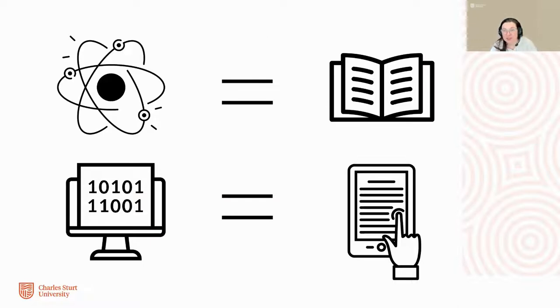Digital information does not exist in the same way that physical representations of information do. Physical representations are a collection of atoms while digital structures are made out of bits.